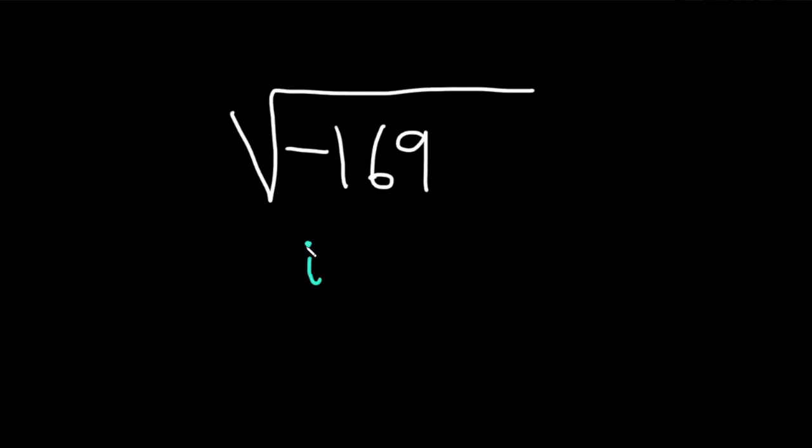So this is i, and then we still have the square root of 169. Now, the square root of 169 is 13. So this is equal to i times 13.